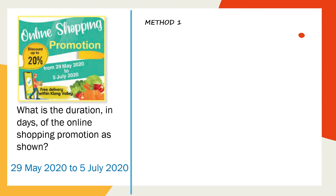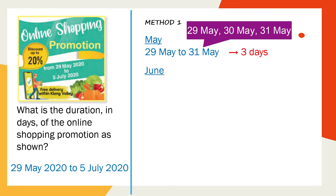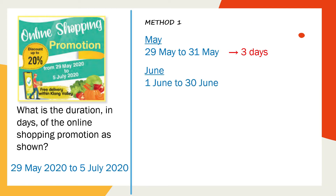Let's see method one — we calculate manually. First, count the number of days in May. From 29th May to 31st May you have three days. Then from 1st June to 30th June you have 30 days, because the month of June has 30 days.